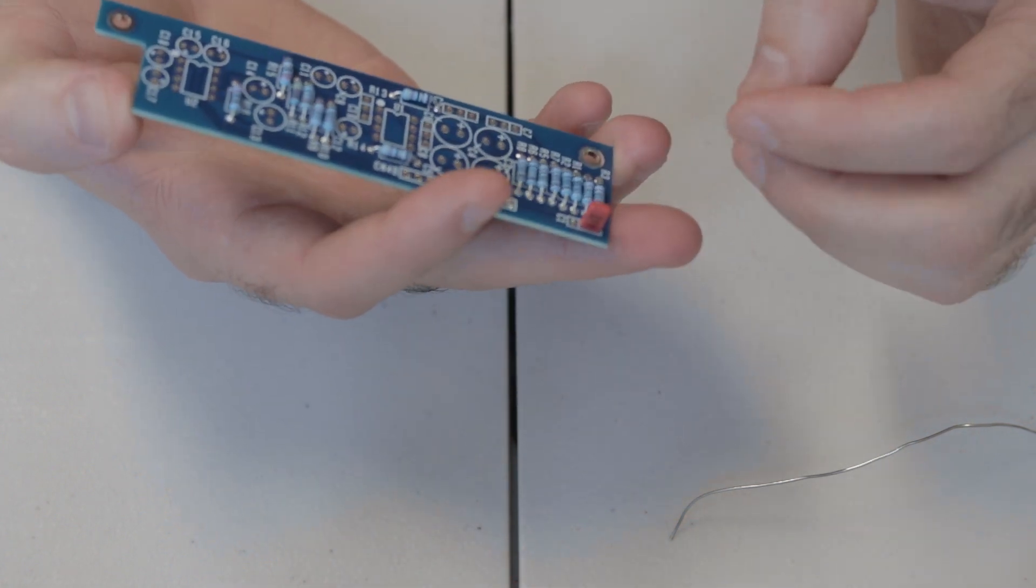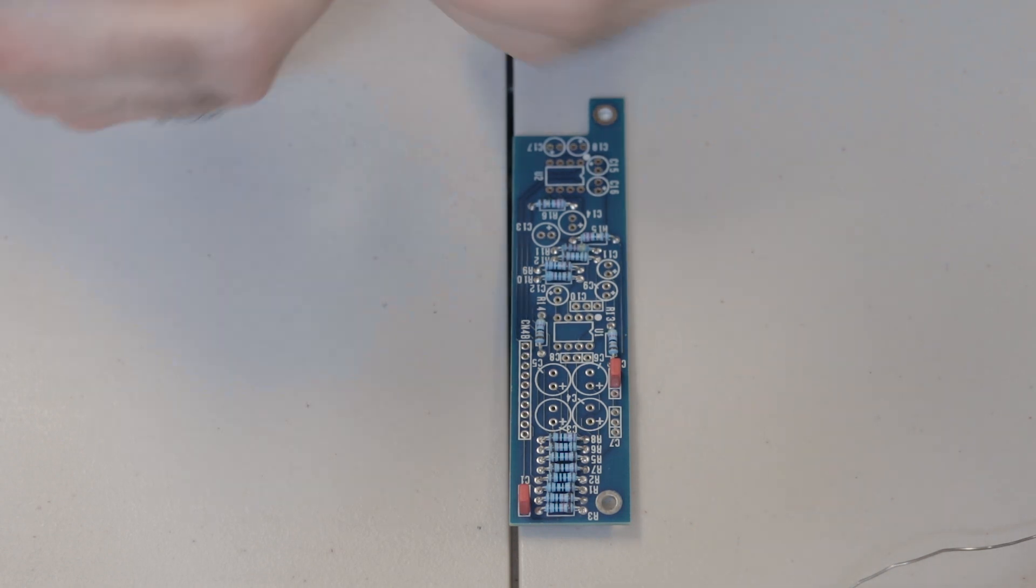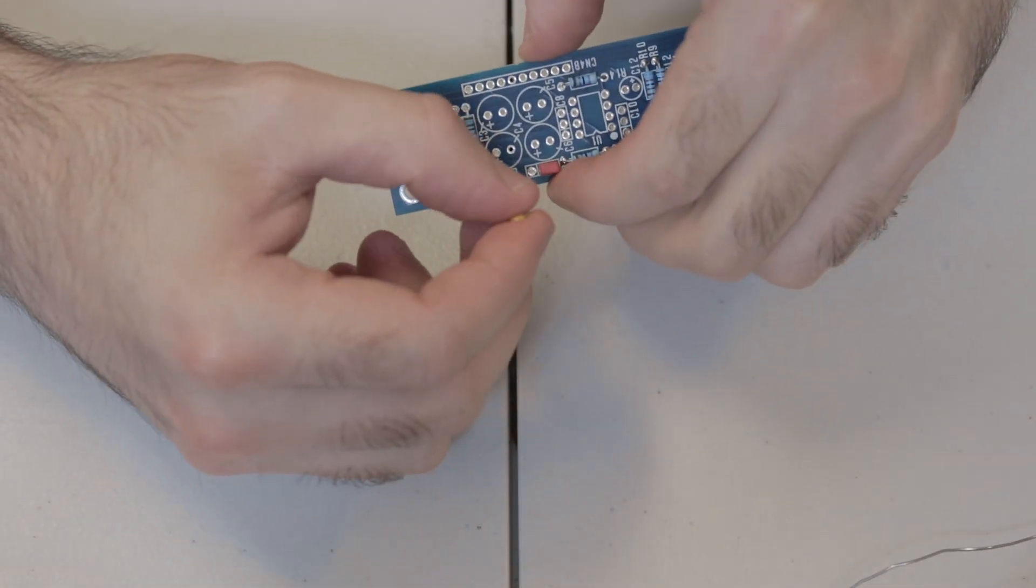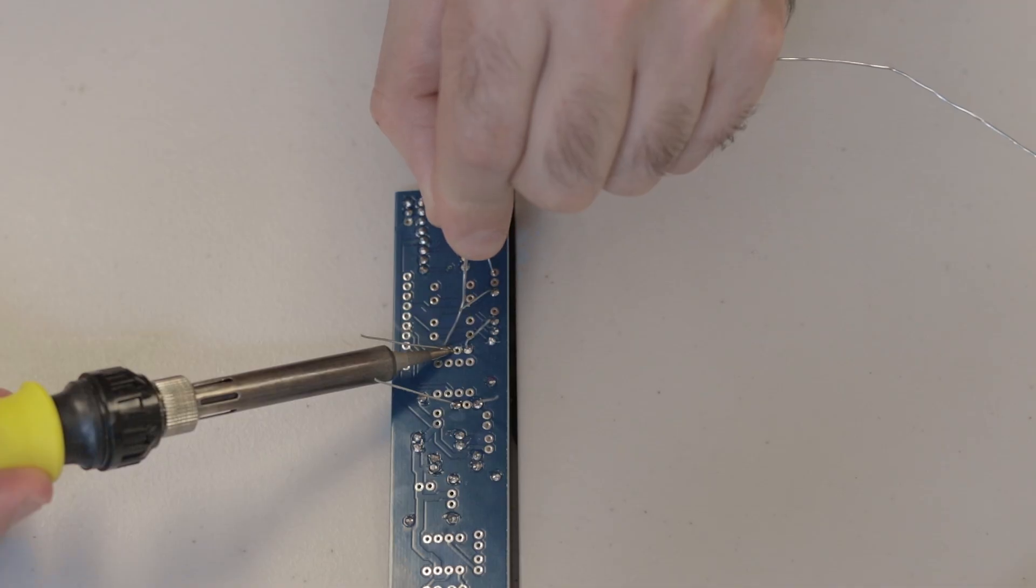And then after you do the film capacitors, there's these other ceramic capacitors to put in as well. There's three of them, just these little yellow ones. You can just bend those legs to hold them in place. And then you can go ahead and solder them and then give those legs a snip.